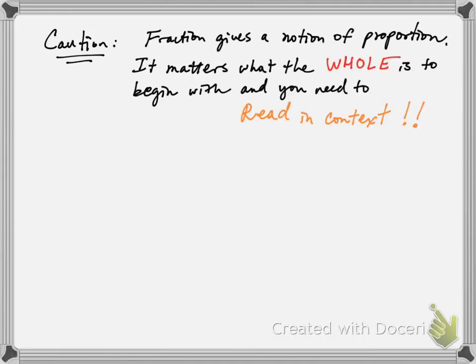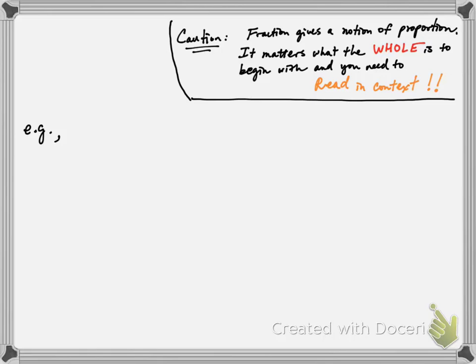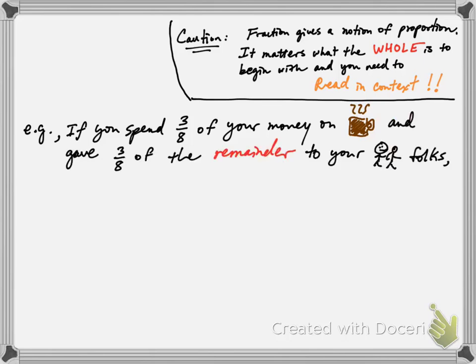One place where people typically make mistakes on fraction calculation is to forget that fraction gives a notion of proportion. So it really matters what the whole is to begin with, and you have to read it in context. Let me give you an example for that. Imagine you spent three-eighths of your money on coffee and gave three-eighths of the remainder to your parents. Then how much money is left?